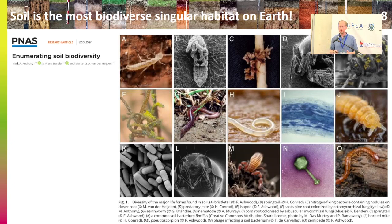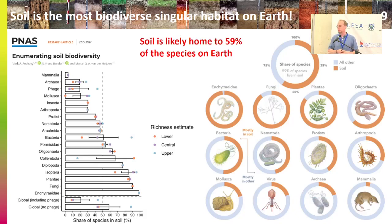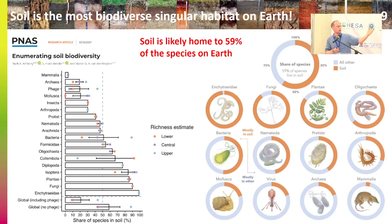Soil is actually the most biodiverse singular habitat on Earth. Soil is likely home to about 60% of all the species on Earth. It really depends on the fauna groups — for example, most fungi are found in the soil. Plantae also grow on soil. For bacteria directly related to health, half of all bacteria are found in the soil. A significant amount of viruses are also found in the soil.